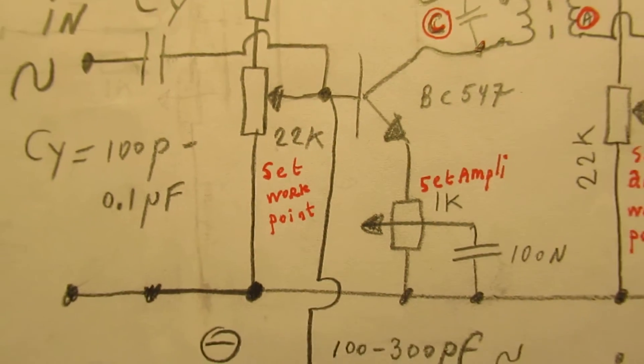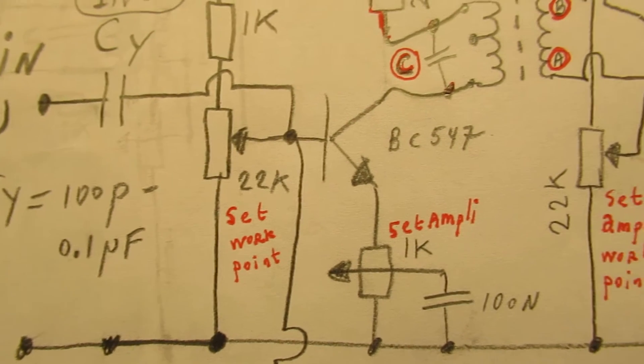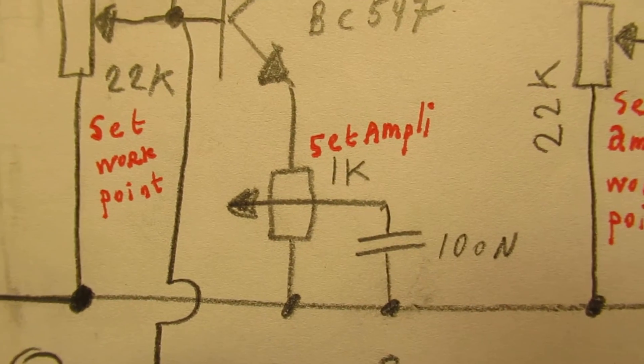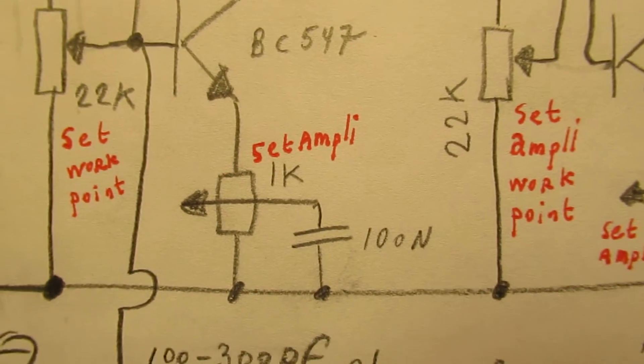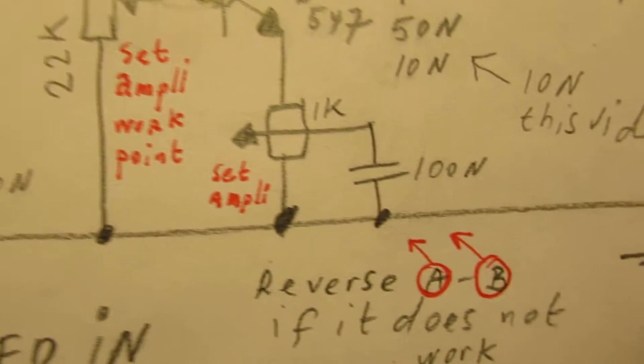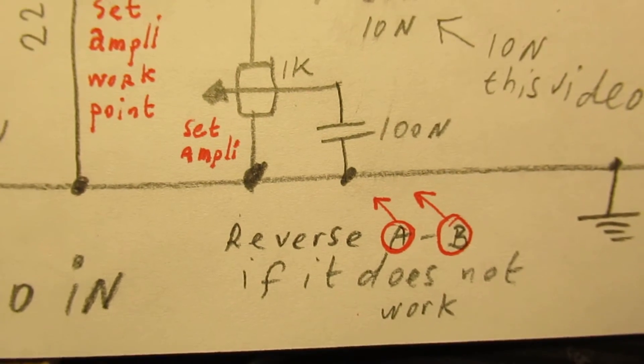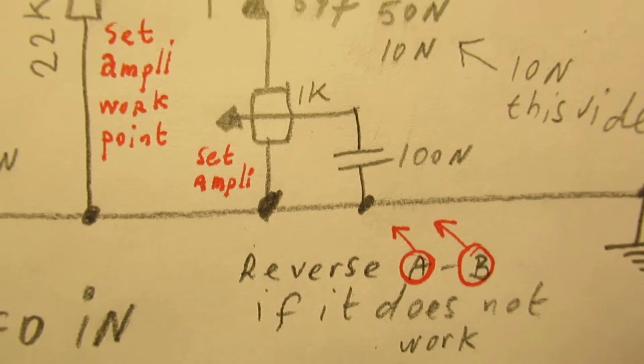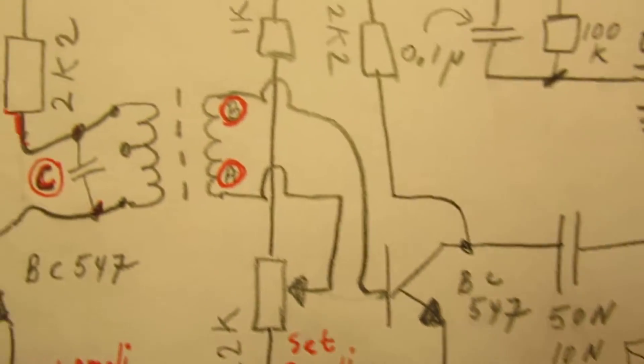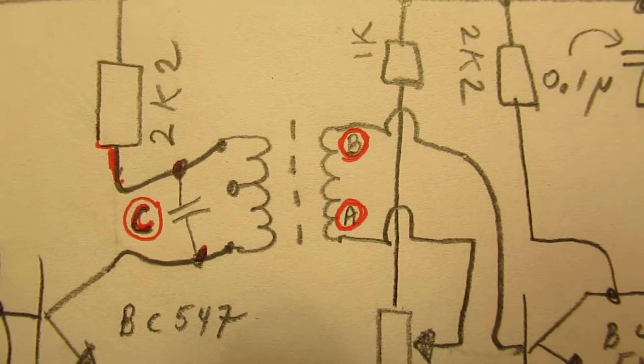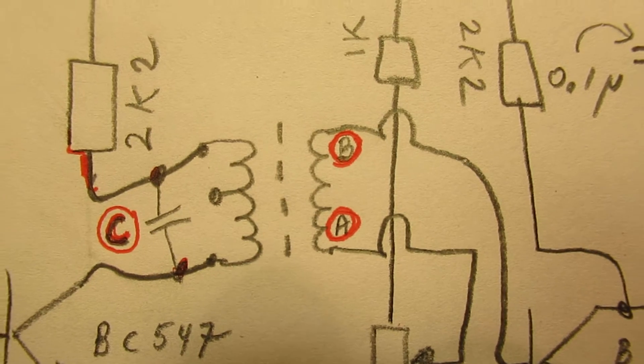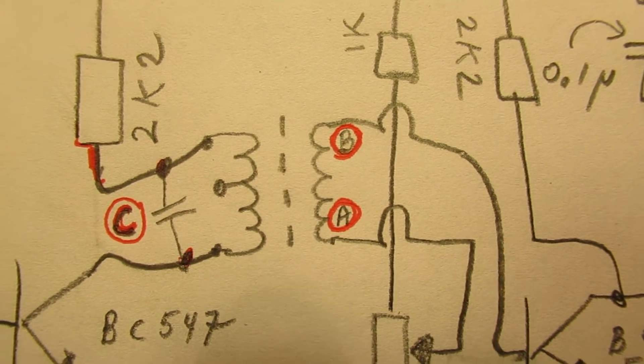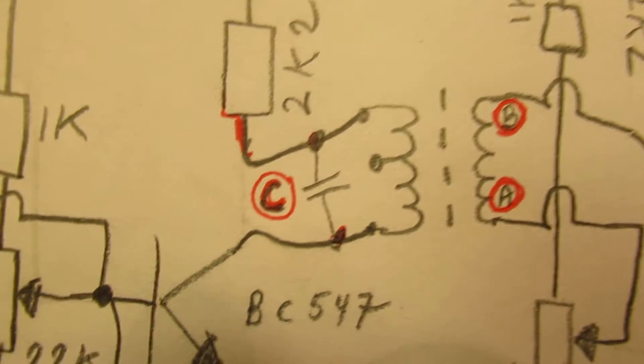With which you can set the working point of the first transistor. Here you can set the amplification from the first stage - all is very critical by the way. Also here you can set the amplification of the second stage. When the circuit doesn't work, reverse A and B, the output coupling coil of the IF transformer.